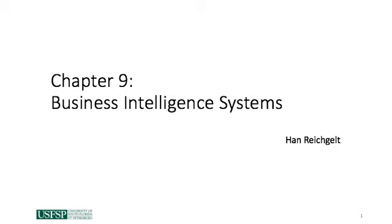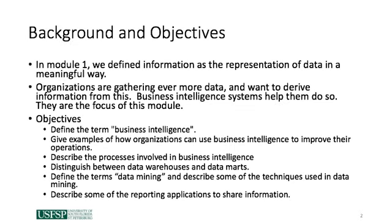Hi, and welcome to this brief presentation on Chapter 9, Business Intelligence Systems. In Module 1, we defined information as the representation of data in a meaningful way. Organizations are gathering ever more data about their operations, their customers, their products and services. However, raw data is not particularly useful, and organizations want to derive information from that data to better meet their objectives. Business Intelligence Systems, the focus of this module, help them do so.